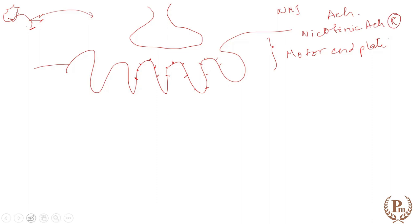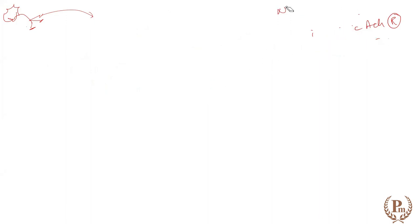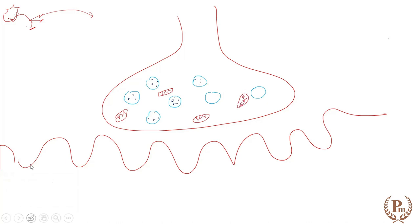Now let's look at the mechanism of neuromuscular transmission with the help of a diagram. This is an example of chemical transmission, so the steps are the same as for a chemical synapse. Taking a larger view of the terminal end and the muscle end: the neurotransmitter acetylcholine is present in vesicles. Mitochondria are also present here. Being a lighter-weight neurotransmitter, acetylcholine is synthesized right at the terminal end.